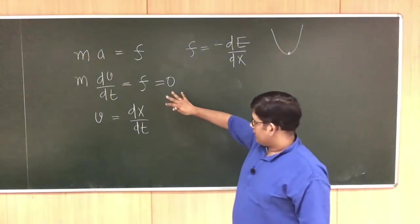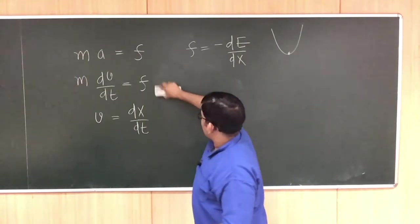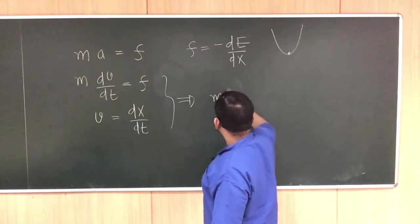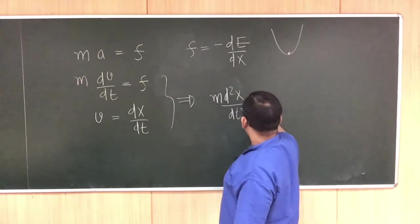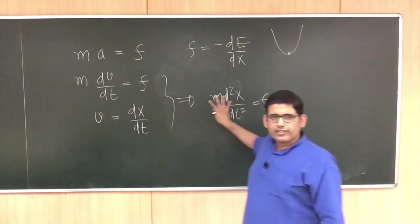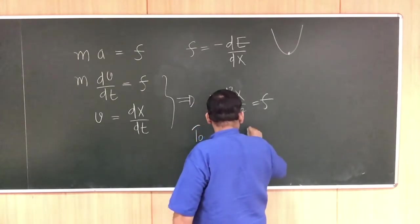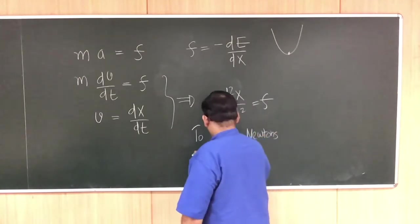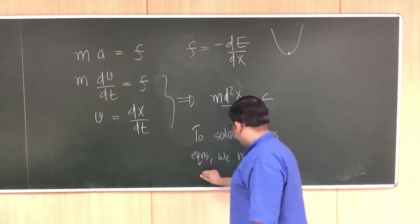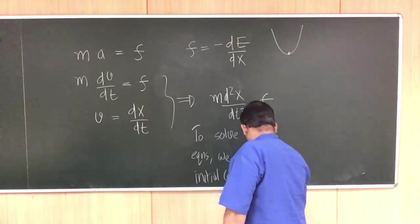There are two equations: m dv/dt is force, and v equals dx/dt. Together, this can also be written as a second-order equation: m d²x/dt² equals force. To solve such an equation, you need two conditions — either you have two first-order equations or one second-order equation — and you need two initial conditions to solve this. So to solve Newton's equation, we need two initial conditions.